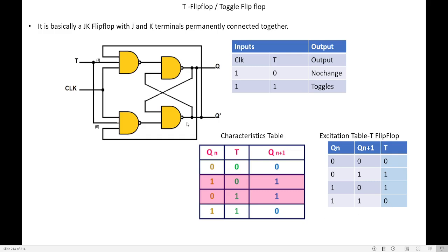Good morning students. Let us look into the next type of flip-flop called T flip-flop. We know a flip-flop is a memory element which is used to store single bit information, that can be either 0 or 1. You can also call this T flip-flop as toggle flip-flop.